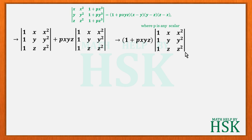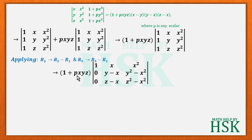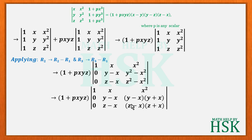This determinant has 1, 1, 1 in column 1, so we apply row operations R2 → R2−R1 and R3 → R3−R1. This gives the matrix with rows (1, x, x²), (0, y−x, y²−x²), (0, z−x, z²−x²). We then factorize y²−x² and z²−x².